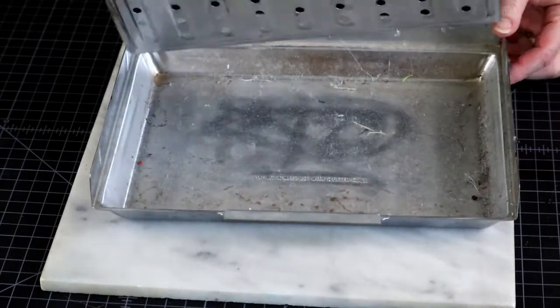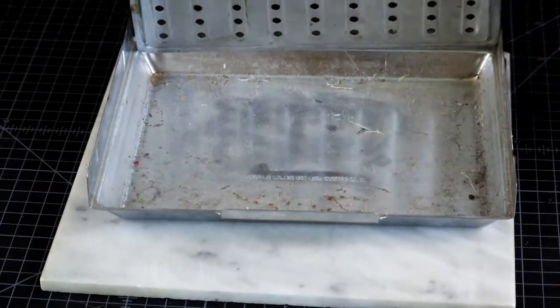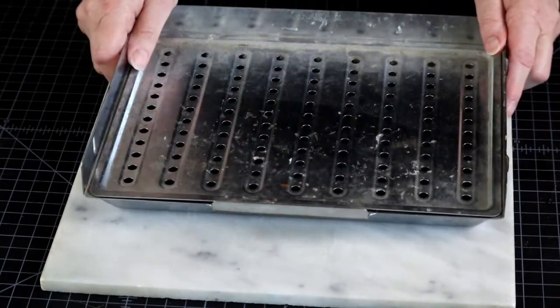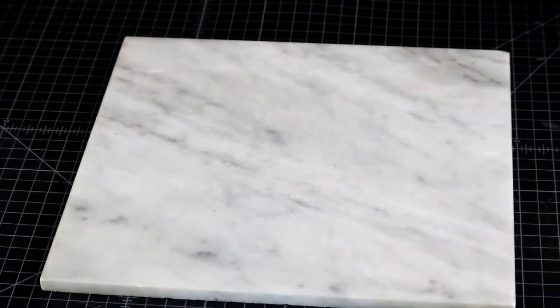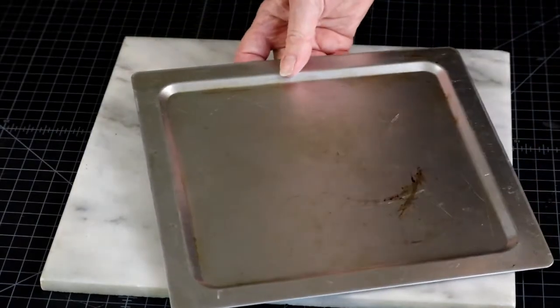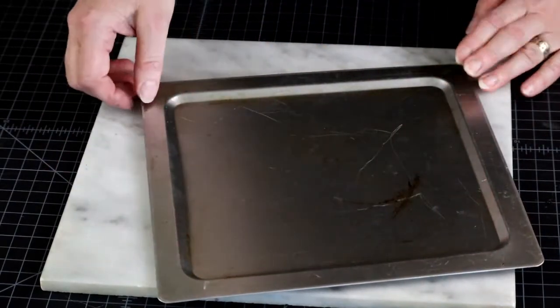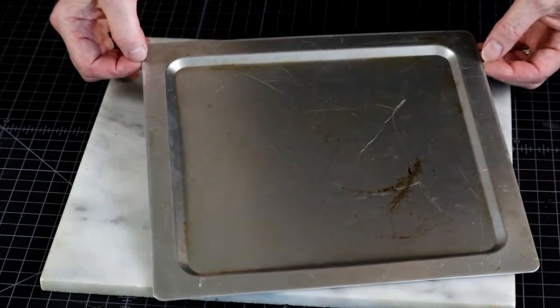People ask if it's okay to use a cookie sheet. Absolutely. But you need to find one that's completely flat. Most of the toaster oven trays are not. Also keep in mind the metal will heat and cool way faster than ceramic tile.